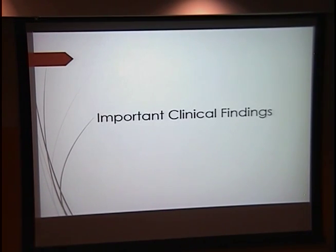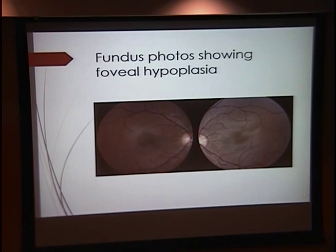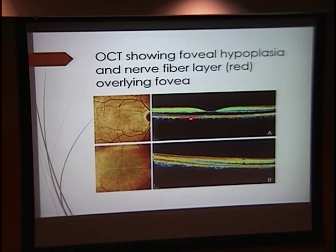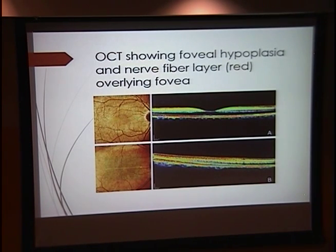There are several important clinical findings that are common in almost every type of albinism. The first is foveal hypoplasia. A good way to visualize this is with an OCT. You can see the top OCT is normal, and on the bottom there's no foveal pit, and the nerve fiber layer has overgrown and is overlying the fovea.